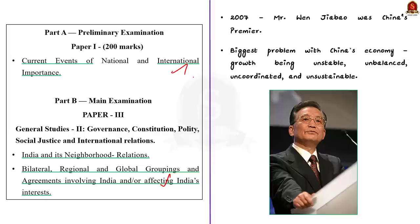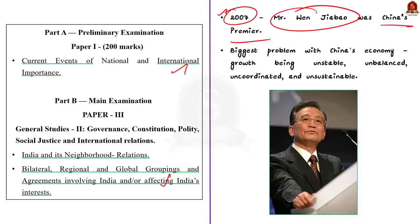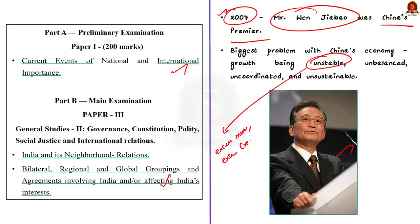The first issue identified by the Chinese premier was unstable economic growth. The country's economic growth was unstable, attributed to factors such as excessively high investment growth, excessive extension of credit, and excessive liquidity of the currency. These factors contributed to an unsustainable economic environment.